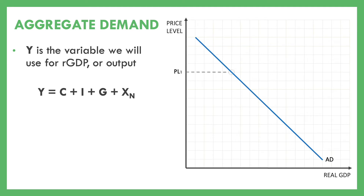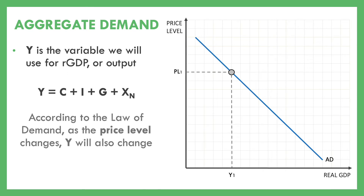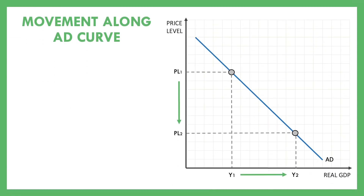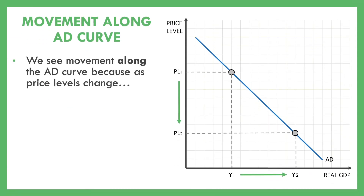If we're hanging out at a given price level and output, that represents the total amount of goods and services demanded at that price level. The law of demand is still in place: if prices drop, the total output demanded increases and we move down along our aggregate demand curve because stuff gets cheaper and we're able to purchase more of it.